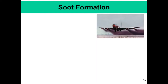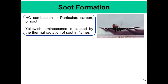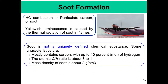The next pollution topic is soot formation. Hydrocarbon combustion in rich flames gives rise to particulate carbon, or soot. As seen from aircraft engines, significant amounts of soot can be produced — though modern aircraft engines have improved, there is still substantial soot formation because combustion in many aircraft engines happens in non-premixed mode. The yellow luminescence seen in flames is essentially caused by thermal radiation of soot, as soot particles act as black bodies and radiate over a huge range of the visible spectrum, giving out the yellow color we observe.